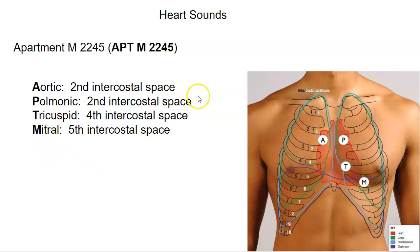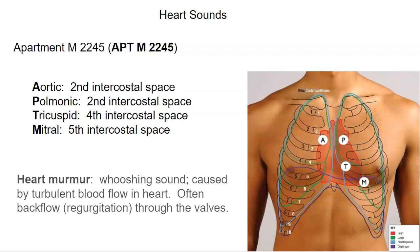Now you might be thinking, these positions don't show the locations of the valves — and you'd be correct. These are not where the valves are positioned in the heart. This is where we auscultate, or listen for the sounds of the heart. A heart murmur is a whooshing sound caused by turbulent blood flow, oftentimes from the backflow or regurgitation of blood through valves. Instead of blood going one way through the valves, blood leaks back and makes distinctive sounds.